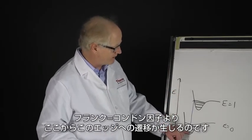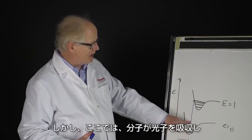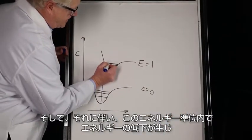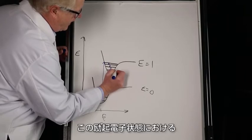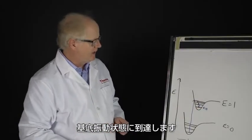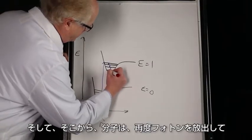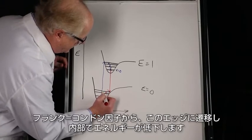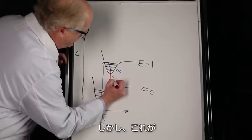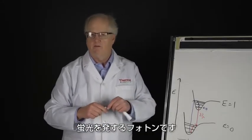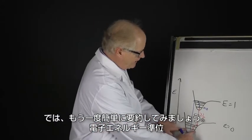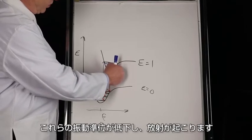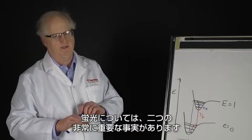It has to do with something called the Franck-Condon principle and the Franck-Condon factor, which causes the transition to go to the edge. What happens is the molecule absorbs the photon and then immediately bursts into vibrational excitation — it begins to vibrate, and as it does it falls down inside this energy level until it reaches the ground vibrational state of the excited electronic state. Then from there it will emit a photon of light, again going to the edge due to the Franck-Condon factors, and then fall down inside. This emitted photon is the fluorescence.